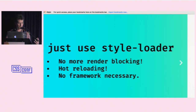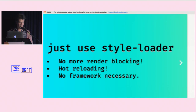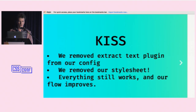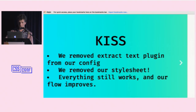We've solved a couple of problems: we're not render blocking anymore, which is really nice. You'll want to pair this with a critical CSS solution so you get some styling at the top of the page. We're hot reloading, which is great. And you don't just use this for CSS — use it for JavaScript, HTML — you can hot reload all your code. You don't need a framework for this; it doesn't have to be React or Angular or a single page app. We use this in WordPress a lot. The config is also simpler now — we've removed Extract Text Plugin, removed the stylesheet, everything still works, and our flow has improved.